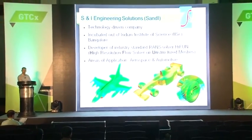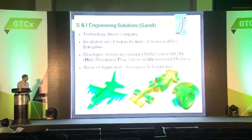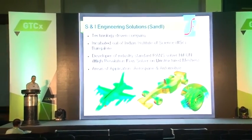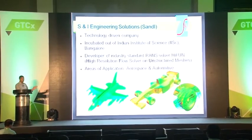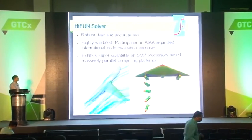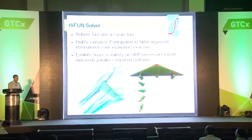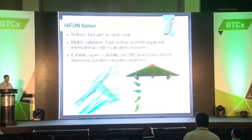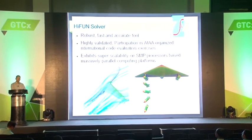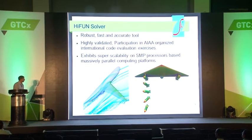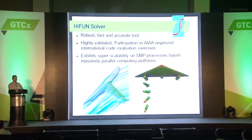Its areas of application are aerospace and automotive. On the left side, you can see simulation of a generic fighter aircraft configuration which is fully loaded. On the right-hand side, you see simulation for a Formula 1 configuration with all its complexities and flow around the tire. The flow solver Hyphen is a robust, fast, and accurate tool for analyzing configurations during both preliminary as well as the detailed design phase. It is highly validated — we have participated in a number of international code evaluation exercises organized by the American Institute of Aeronautics and Astronautics. One of these configurations is a high-lift configuration, which you can see on the left-hand side of this slide.